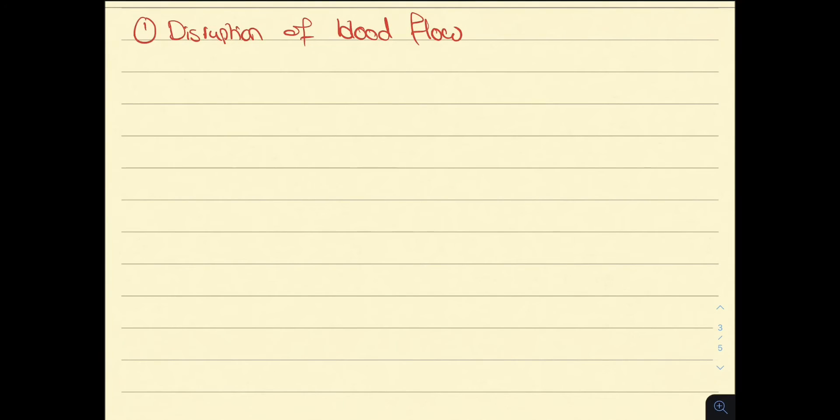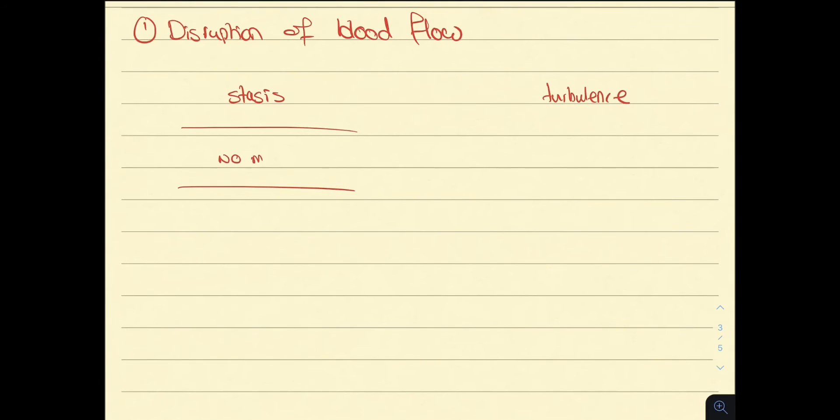Let us start with disruption to blood flow. This can take two forms, stasis or turbulence. In stasis, there is no movement of blood flow. The blood is still. This increases the chances of clot formation.